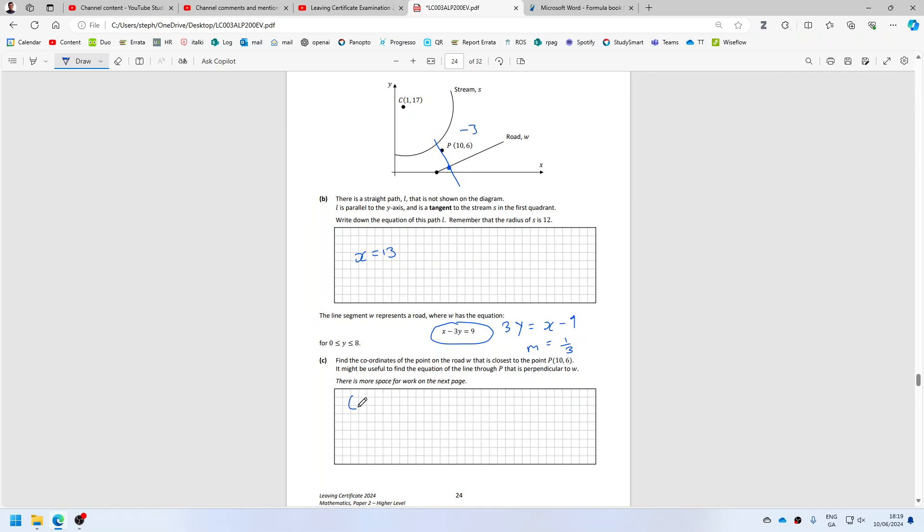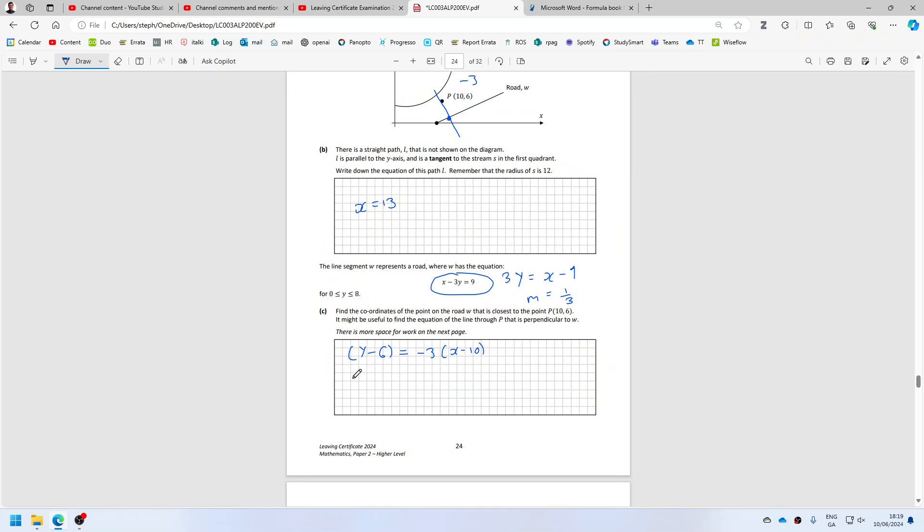So it's going to be y minus y1 equals m, which is minus 3, x minus x1. And then you want to simplify that. So that becomes minus 3x plus 30 equals y minus 6.